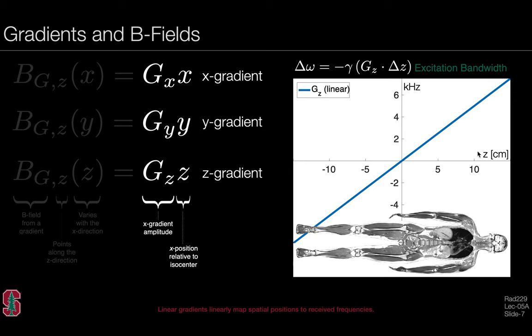Let's map this out. Here we have the z direction, the head-foot direction of the scanner. When we turn on a Gz gradient, we have a mapping shown in this blue line that maps spatial positions to frequency. If we have an RF pulse with an excitation bandwidth of roughly 2 to 4 kilohertz, it will map according to the gradient to these particular spatial positions, effectively exciting a slice or slab.